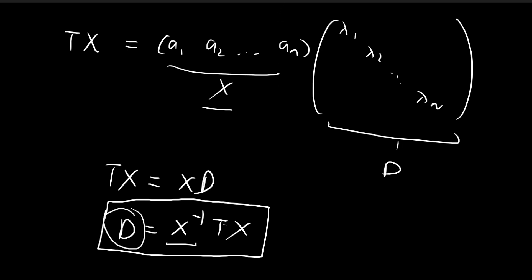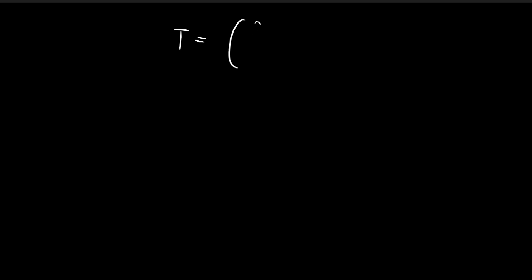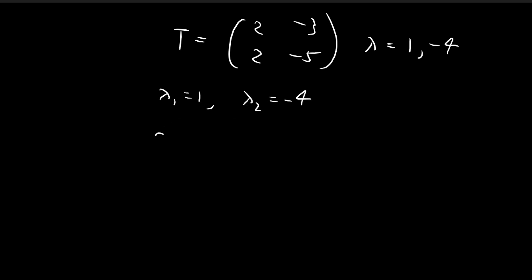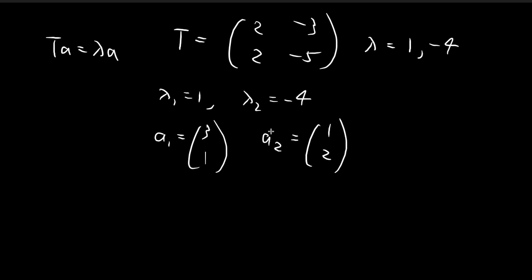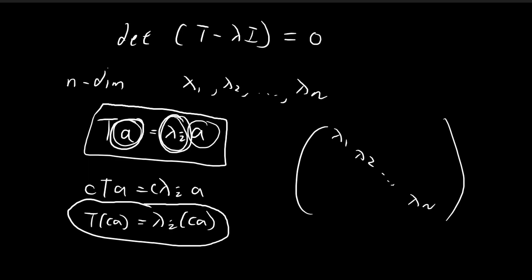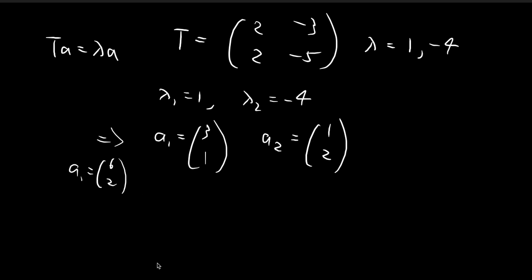Let's explain this with an example. Recall from last time we had a matrix T, and found eigenvalues λ = 1 and λ = -4. So λ₁ = 1 and λ₂ = -4. The corresponding eigenvectors, found by substituting back into T·a = λ·a and solving the system of linear equations, are a₁ = [3, 1] and a₂ = [1, 2]. Note I could also use [6, 2] for a₁ since you can scale eigenvectors, but I'll use the simplest form.